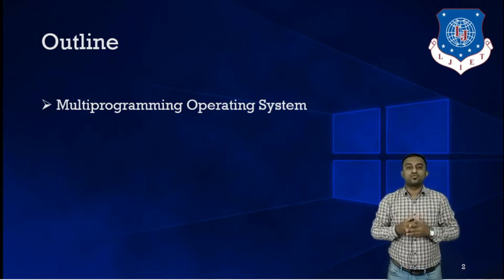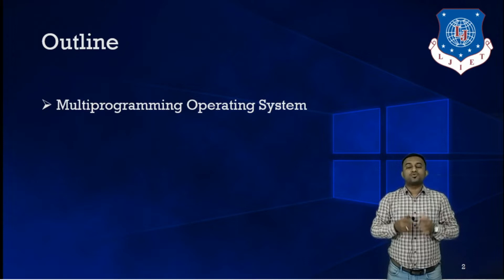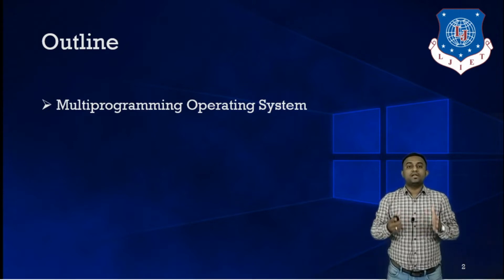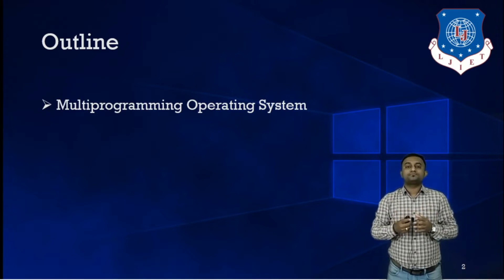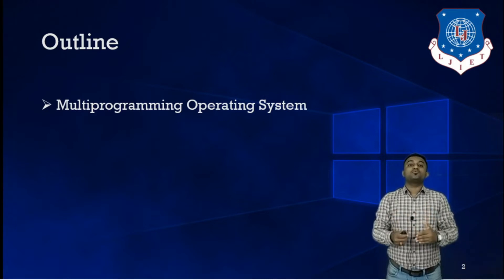So first let us understand the limitations of spooling, and then we will discuss how that problem can be overcome with the help of multiprogramming operating system. What was the problem when dealing with spooling? Spooling works on a single processor system. Once a process is scheduled for execution and given to the CPU for its execution, once it completes its task, then and then only can you schedule another process for execution.